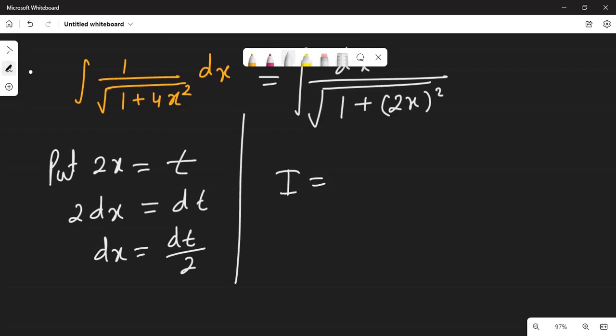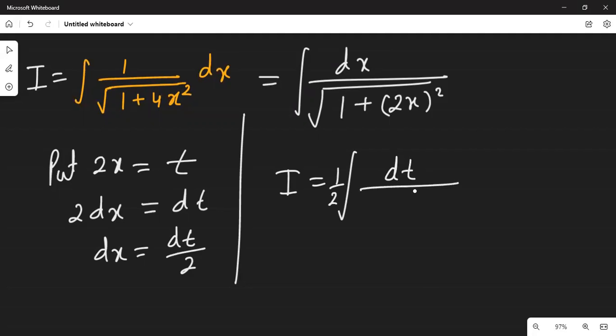If we write this as integral I, I equals integration of dt over 2. We can write 1 by 2 outside, dt in the numerator, and this would be square root of 1 plus t square.